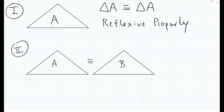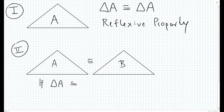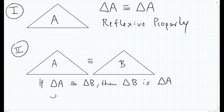Let's say the second case: you have two triangles that are congruent — triangle A and triangle B. We can say that if triangle A is congruent to triangle B, then triangle B is congruent to triangle A. And that is called the symmetric property.